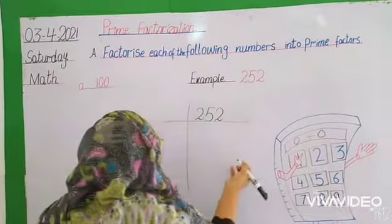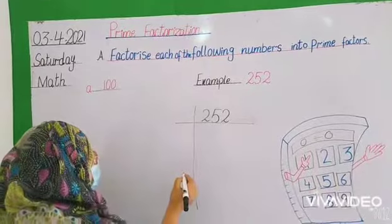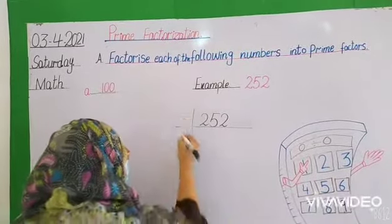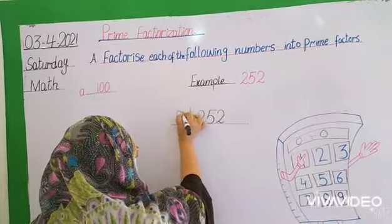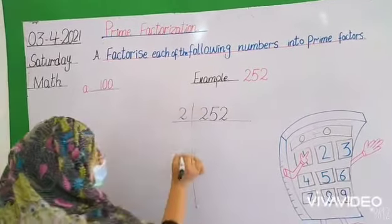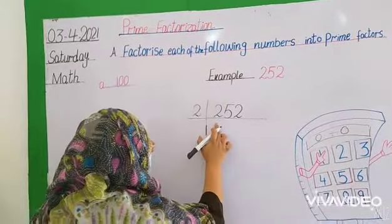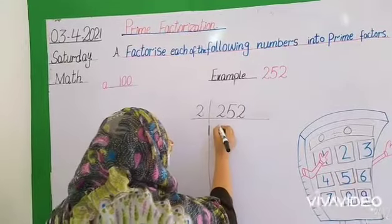Students, we always start with the smallest prime number, like 2. Does 2 come in 2's table? Yes, 2 ones are 2.